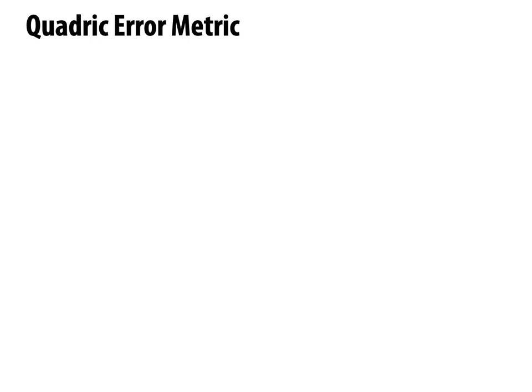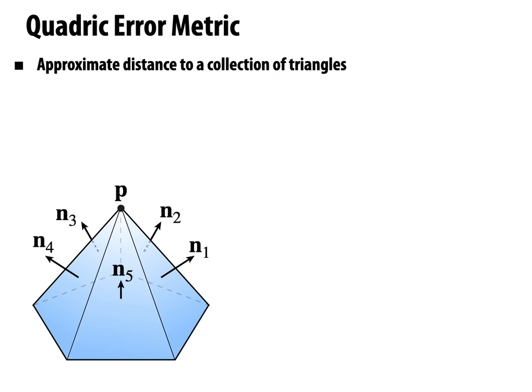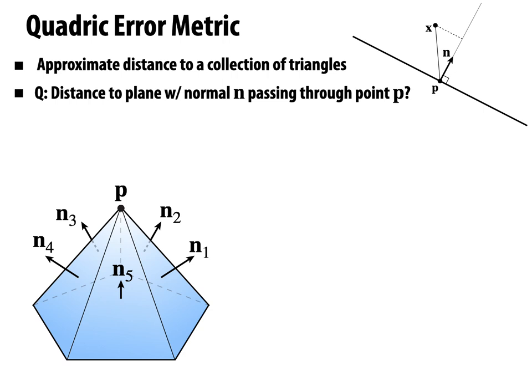How does the quadratic error metric work? We store something called a quadric, which intuitively keeps track of the distance to some collection of triangles. The squared distance of a point x to a plane with unit normal n passing through point p is (n · (x − p))². The quadratic error is then the sum of squared point-to-plane distances for all planes in the set.